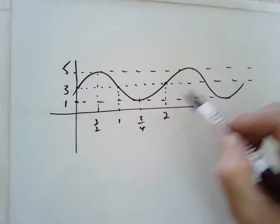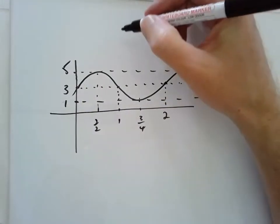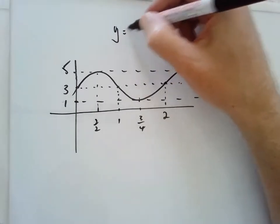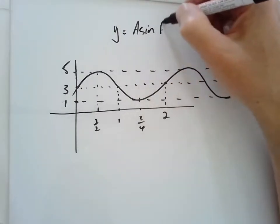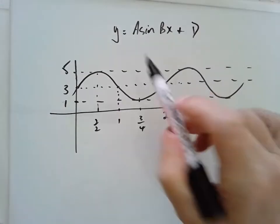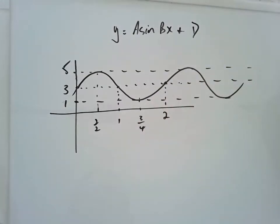So we look at the function and we go, oh jeepers, that looks like a sine graph. So we give our general form and then that organizes our head to say that we've got to find a, b, and d.